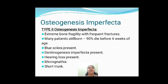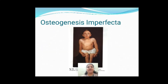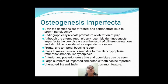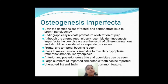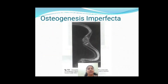There is also dentinogenesis imperfecta associated with this condition. Type two is most severe — most of the babies will be stillborn, and if birth occurs, the babies will die before four weeks of age. Type three is similar. In all four types, both primary dentition and permanent dentition will be affected, with dentinogenesis imperfecta, malocclusion, cross bite, and open bite also seen. Radiographically, there will be osteopenia, bowing, angulation, multiple fractures, and Wormian bones in the skull.